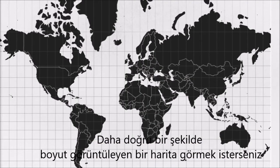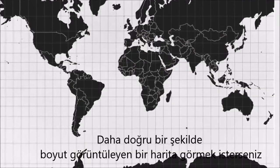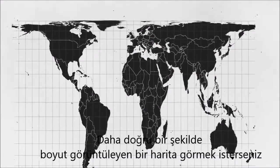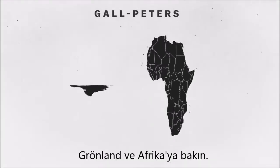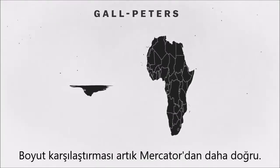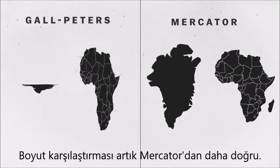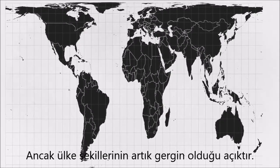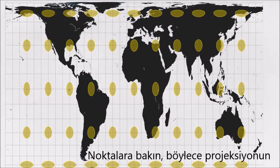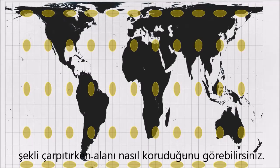If you want to see a map that more accurately displays land area, you can use the Gall-Peters projection — this is called an equal area map. Look at Greenland and Africa now: the size comparison is accurate, much better than the Mercator. But it's obvious that the country shapes are totally distorted. Here are those dots again so we can see how the projection preserves area while totally distorting shape.